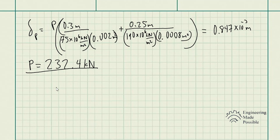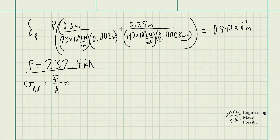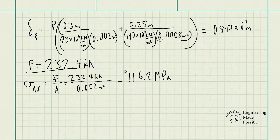The force of 232.4 kilonewtons is produced within the materials due to them making contact and being restrained from further expansion. With this force, we can solve for the stress developed within the aluminum rod, which equals that force divided by the cross-sectional area, giving us 116.2 megapascals — the stress developed within the aluminum rod.